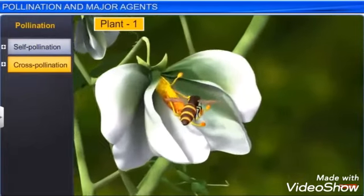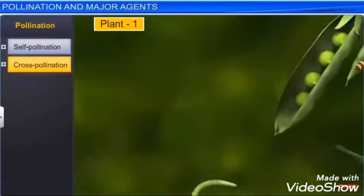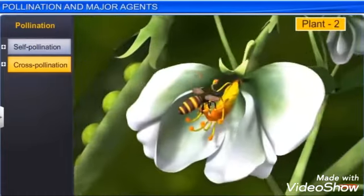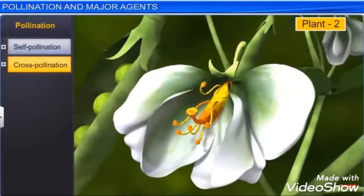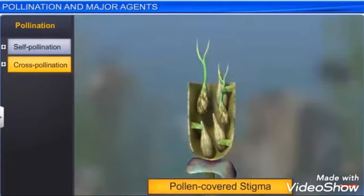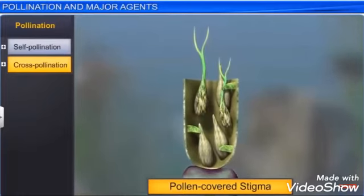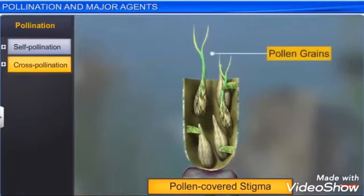In cross-pollination, two plants and two flowers are necessary. Pollen grains from one flower settle on a second flower with the help of some agency — this is called cross-pollination, generally known as allogamy. Allogamy has two types: xenogamy and hybridization.